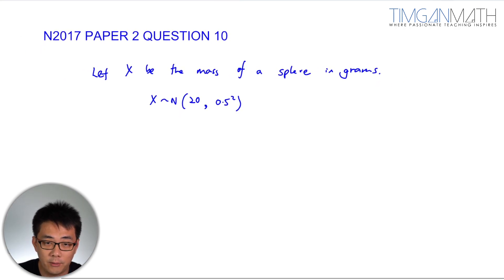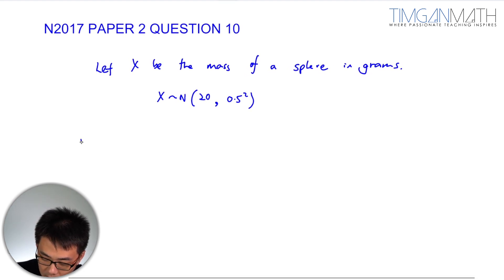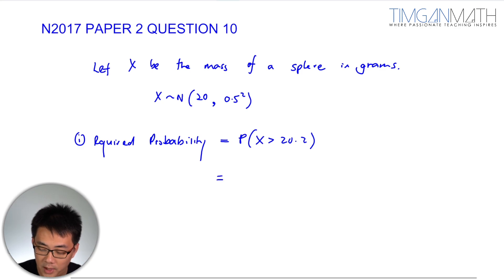Then find the probability that the mass of a randomly selected sphere is more than 20.2 grams. So the first one, the required probability is P of X bigger than 20.2 grams. So I think this shouldn't be a problem here.